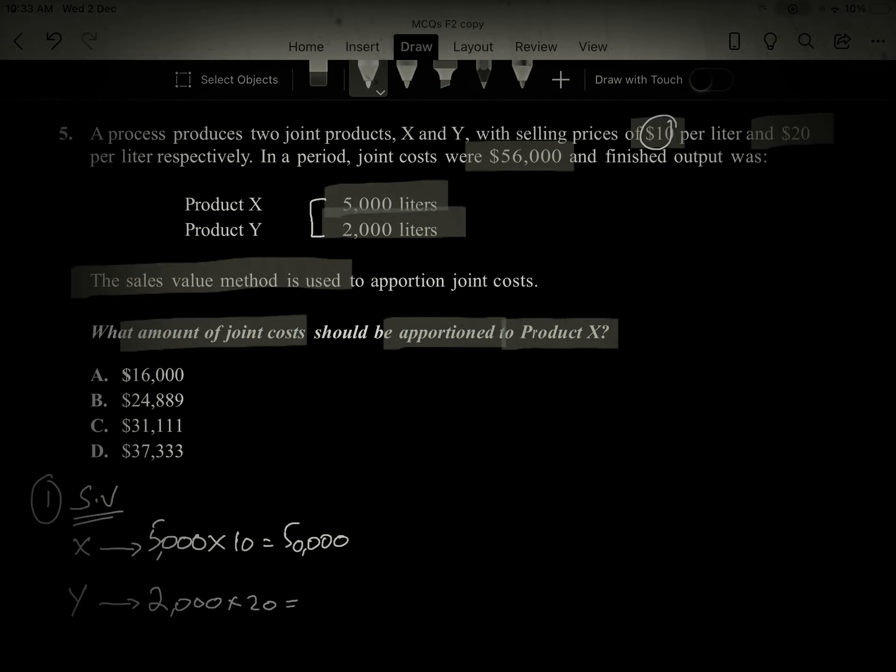For Y, forty thousand. And if you add both, then it will be ninety thousand.